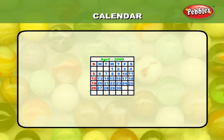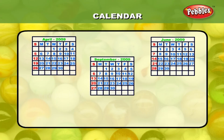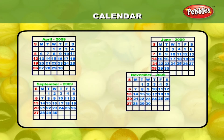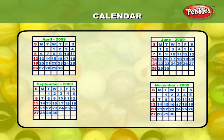April, June, September and November have only 30 days a month.